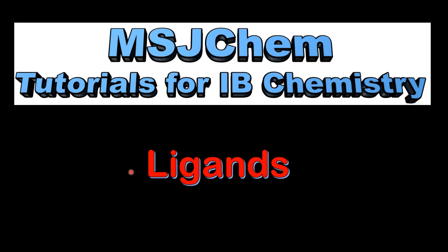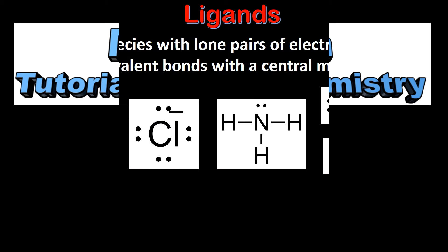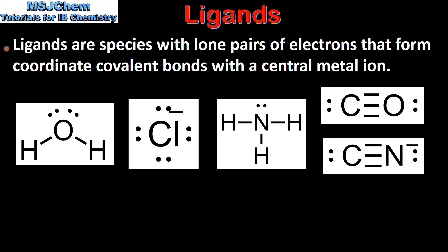This is MSJChem. In this video I'll be looking at ligands. Ligands are species with lone pairs of electrons that form coordinate covalent bonds with a central metal ion.